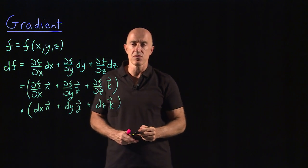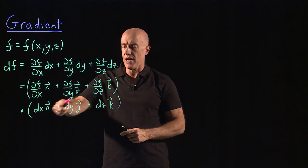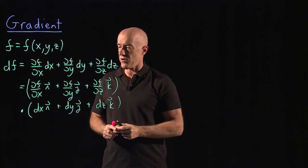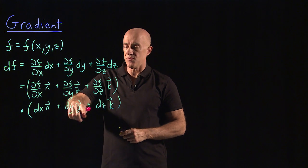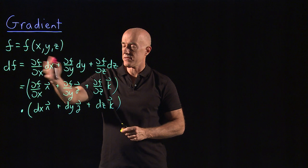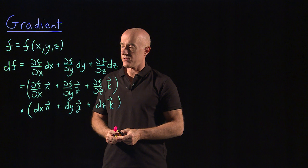Remember, the cross terms are all zero. i·j is zero, i·k is zero, j·k is zero. And i·i is one, j·j is one, and k·k is one. So when you take the dot product, this is the expression. So now we have the dot product of two vectors.